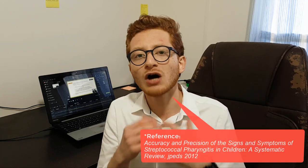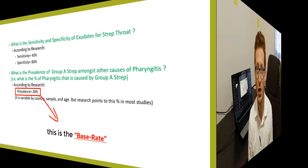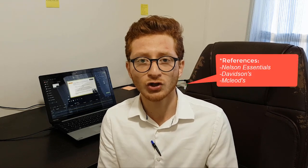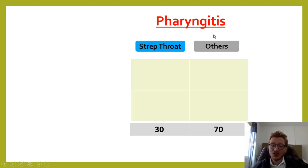What's the prevalence of strep as the cause of sore throats? The literature says it is 30 percent — so out of 100 people with a painful throat, only 30 percent will have strep as the cause of their pharyngitis. We also need to know the reliability of our own clinical examination. Exudates are more frequent in bacterial pharyngitis — the sensitivity of exudates for strep throat is 40 percent and the specificity is 80 percent.